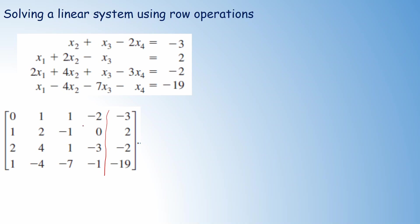Now we are going to convert this augmented matrix into its row echelon form. First, we have a 0 in the top-left position. When working from the left, we must ensure there is a non-zero value at the top of the first column. To get the pivot element equal to 1, it is best to interchange with either the second or third row. Here, I interchange the first row and second row.